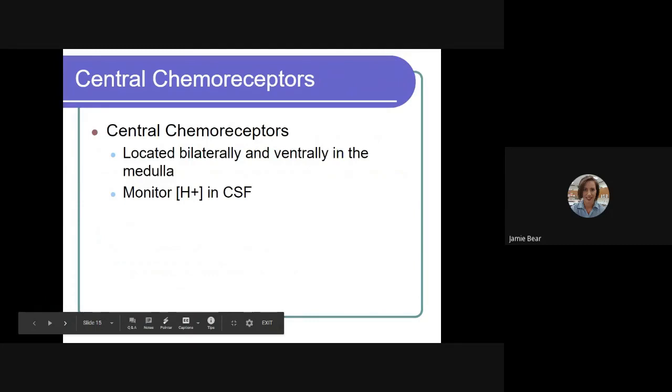Both carbon dioxide and hydrogen ions and bicarbonate ions can cross over the blood brain barrier from the blood into that CSF. And as we have more carbon dioxide, we will then have more hydrogen ion concentrations.